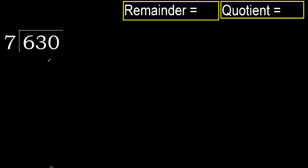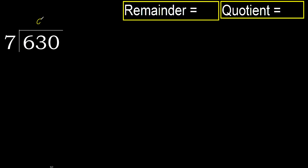630 divided by 7. 6 is less, therefore next. 63 is not less, therefore with 63: 7 multiplied by which number is nearest to 63 but not greater? 7 multiplied by 9 is 63, which is not greater.